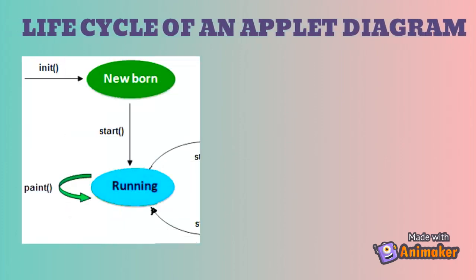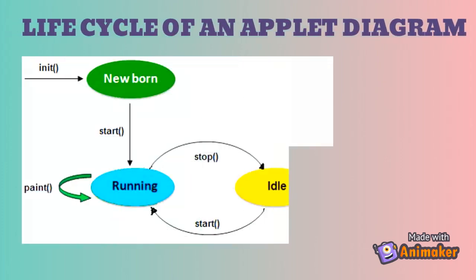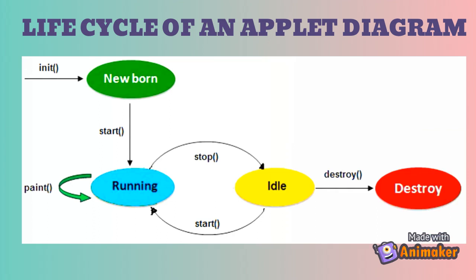You can see the diagram for Applet lifecycle. The init method is called for Applet initialization. Then the Start method is called and the Applet goes to Start state. Whenever the Paint method is called, the Applet is currently running. When the Applet window is minimized, it will go to the stopped state. If the browser is maximized again, it will go back to running. When the browser is closed, the Applet is destroyed.